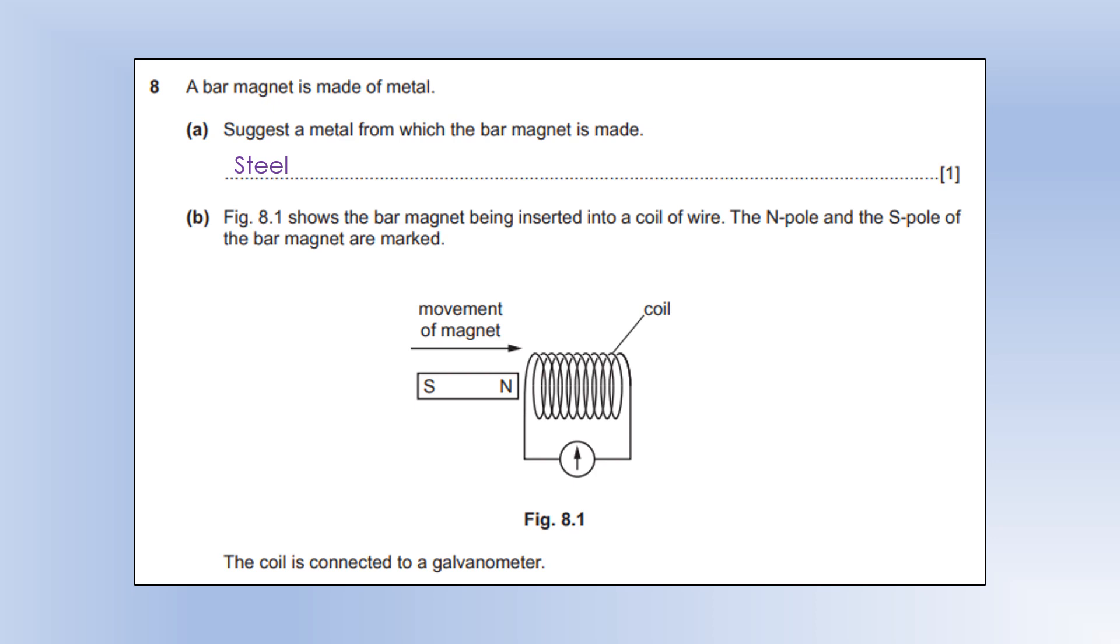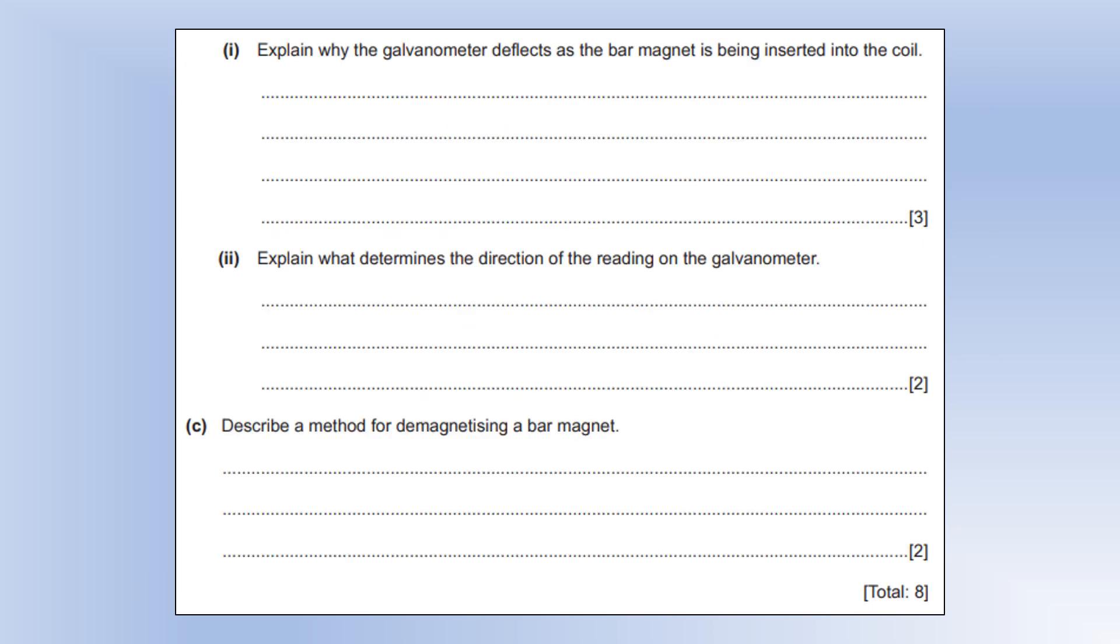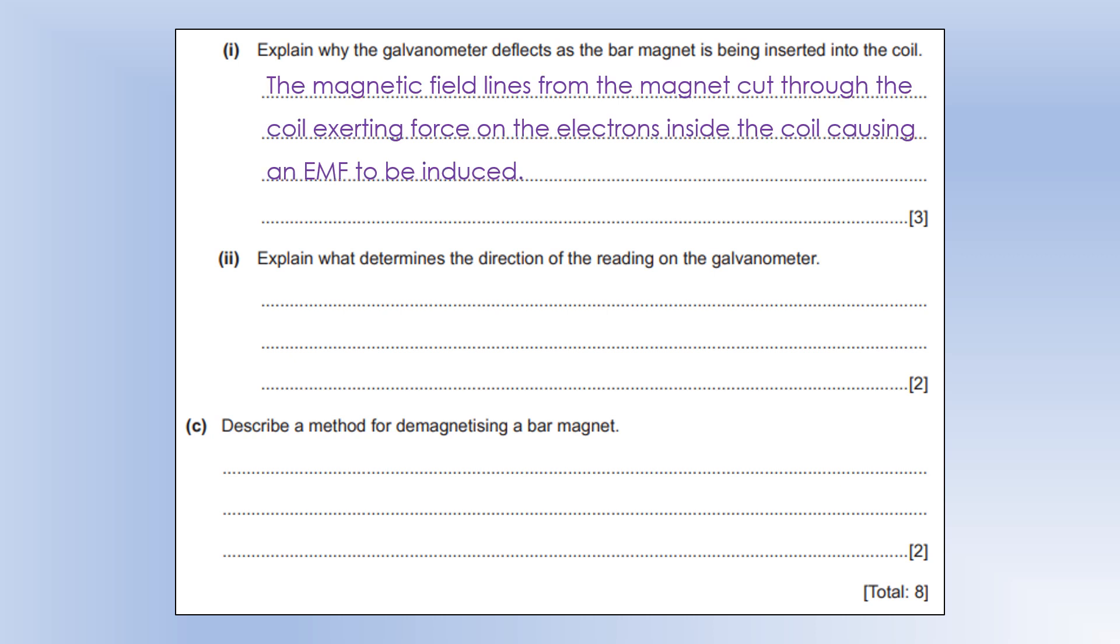The diagram shows a bar magnet being inserted into a coil of wire. The north and south pole of the magnet are marked. We're going north pole in first, and we've connected it to a galvanometer, or a very sensitive ammeter. Explain why the galvanometer deflects as the bar magnet is being inserted. We've got magnetic field lines from the magnet cut through the coil, and that exerts a force on the electrons inside the coil, so they move and cause an EMF to be induced. Because, essentially, all the electrons move to one end of the wire, leaving a positively charged end at the other, so we've got an EMF.